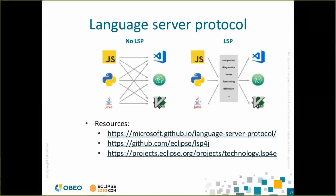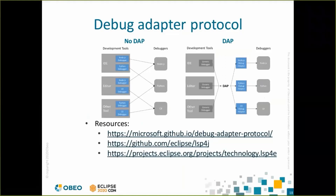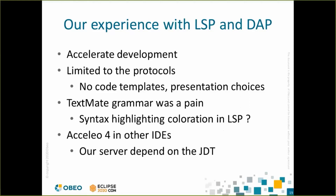The editor you saw in the demonstration has been built on top of the Language Server Protocol. The LSP goal is to decorrelate the language from the development environment. The language is implemented in servers that can be used in any IDE compatible with LSP. In a similar way, we use the Debug Adapter Protocol to implement the debugger. Both LSP and DAP implementations can be found in LSP4J, both client and server side. The client side for Eclipse can be found in the Eclipse LSP4E project.